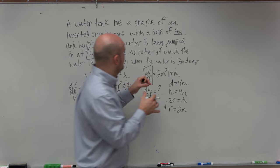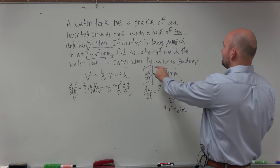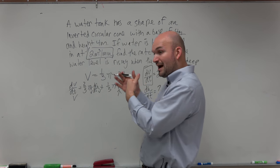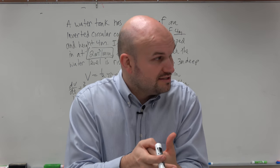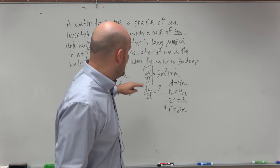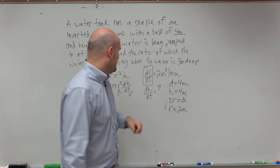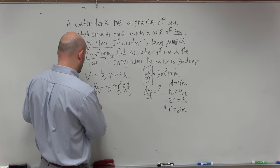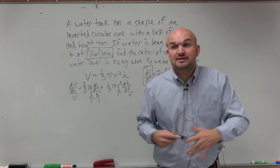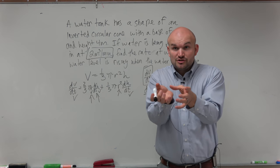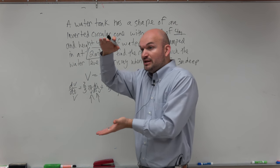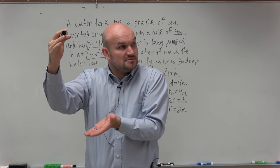Find the rate at which the water is leveling when it is 3 meters deep. So we know at what derivative we want to find the water level. So we're looking at the change when it's at 3 meters deep. The problem is, do we have anything for r or dr/dt? Like when it's at 3 meters deep, do we know what the radius is? We know what the initial radius is.